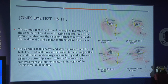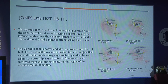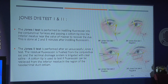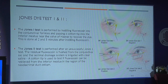The Jones dye test 1 is performed by instilling fluorescein in the conjunctival fornix and then passing a cotton tip into the inferior meatus. Results are usually obtained in 2 to 5 minutes after instilling the fluorescein. Jones test 2 is performed if Jones test 1 is unsuccessful. Here, the residual fluorescein is flushed from the conjunctival sac and the cotton tip is used to test the fluorescein retrieved from the inferior meatus.